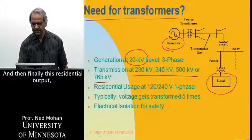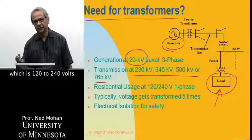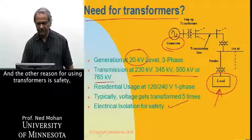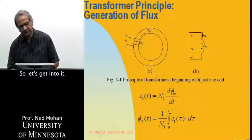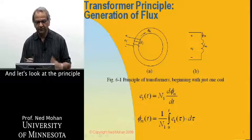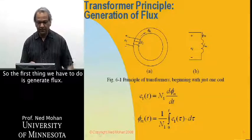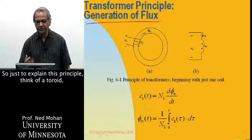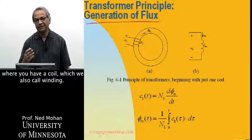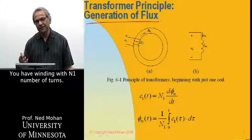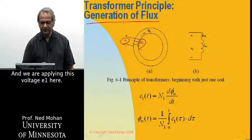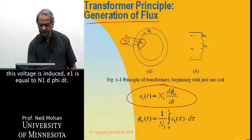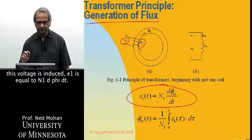And then finally this residential output, which is at 120 to 240 volts. The other reason for using transformers is for safety and electrical isolation. So let's look at the principle on which these transformers work. The first thing we have to do is to generate flux. Think of a toroid where you have a coil — we also call it a winding — with N1 number of turns, and we are applying voltage E1 here. By Faraday's law, this voltage is induced: E1 is equal to N1 dΦ/dt.